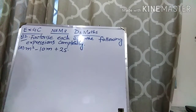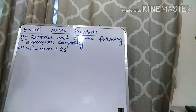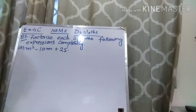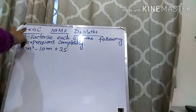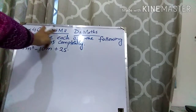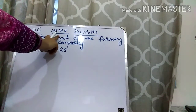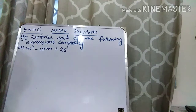Assalamualaikum students, how are you all? I hope that you all are doing great. Welcome to your channel, Maths D1, D2 Scientific Academy. Today's lecture is related to Chapter 4, which is Expansion and Factorization of Algebraic Expressions. I am going to explain Exercise 4C, and your book is Neo Solibus Mathematics D2 Maths.